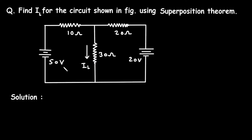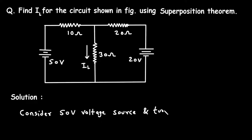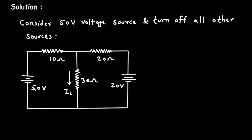Solution. First, we will consider I_L due to the 50 volt voltage source and turn off all other sources. We are considering this 50 volt voltage source, and when we turn off the 20 volt voltage source, it will be replaced by a short circuit, because when we turn off a voltage source we replace it by short circuit. When we turn off a current source, we replace it by open circuit. This current will be called I_L prime.